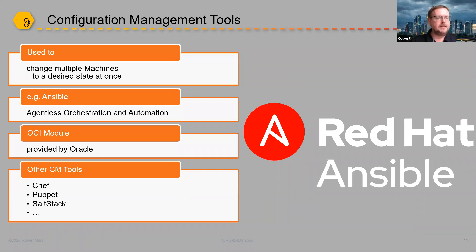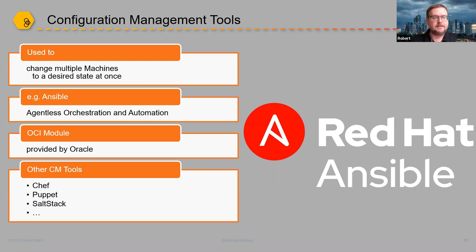The next category of tools are configuration management tools. They are used to change multiple machines to a desired state at once. You can use them to provision cloud resources as well. I picked Ansible as an example - it means agentless orchestration and automation, is developed by RedHat and is open source. The OCI module is provided by Oracle, so Oracle makes sure all the features are there and working as intended. Ansible is only one among many configuration management tools - you can use Chef, Puppet, SaltStack, or whatever you like.